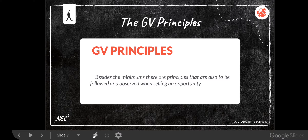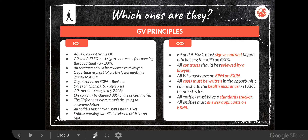Now, the GV principles. Besides the minimums, there are also principles, and these are the rules regarding the selling part of the opportunity. There are principles towards the ICX — which is IGV and IGT — and also OGX — OGV and OGT. I'm not going to go through each and every one of them because you have access to these slides and can check them whenever you wish, but I'll go very quickly just on the surface.